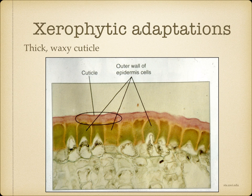For example, here you can see a thick, waxy cuticle. This forms a waterproof barrier, reducing the water loss by evaporation from the epidermal cells. There can still be transpiration through the cuticle, and this accounts for about 10% of the water loss. The remaining 90% is lost through the stomata.